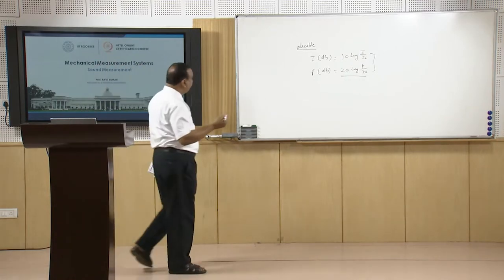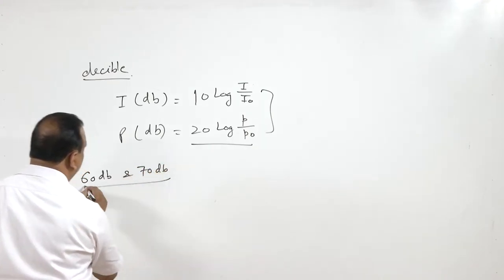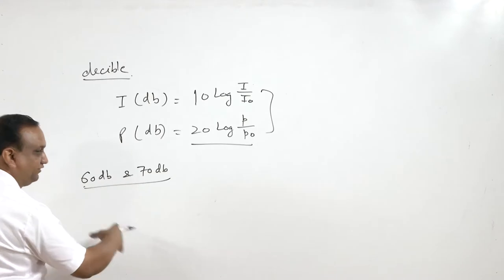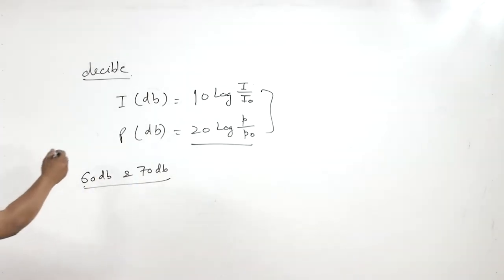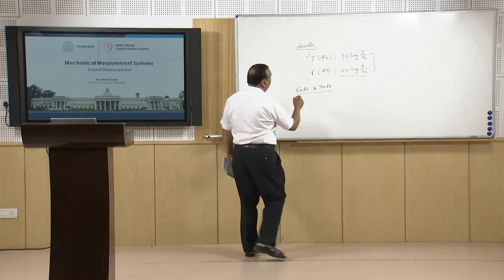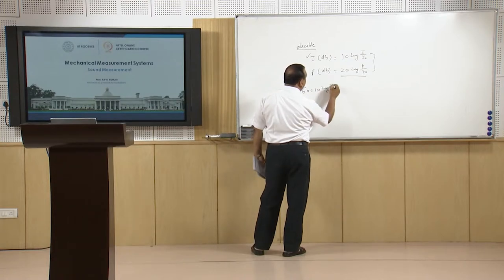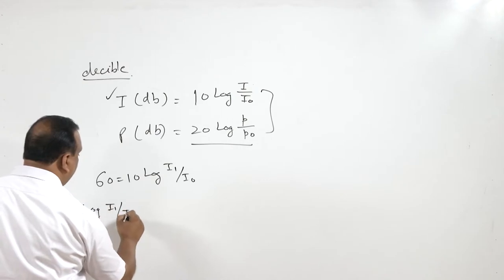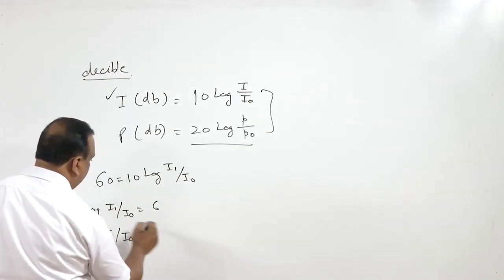Suppose we have a sound of 60 dB and another of 70 dB — how do we add them? One source gives 60 dB and another gives 70 dB. We cannot simply add 60 + 70. Instead, since 60 dB means 60 = 10 log(I₁/I₀), it follows that I₁/I₀ = 10⁶.